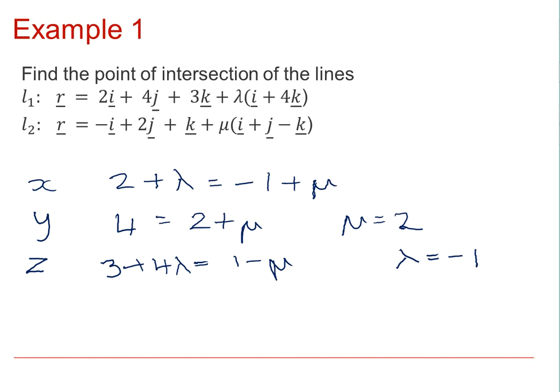This then leads to the fact that R, or the point at which L1 and L2 intersects, may be found by substitution of either lambda or mu. Here, I'm going to use that first equation for L1 and at 2, 4, 3 is the position vector to get onto the line. And then using the value of minus 1 for lambda,